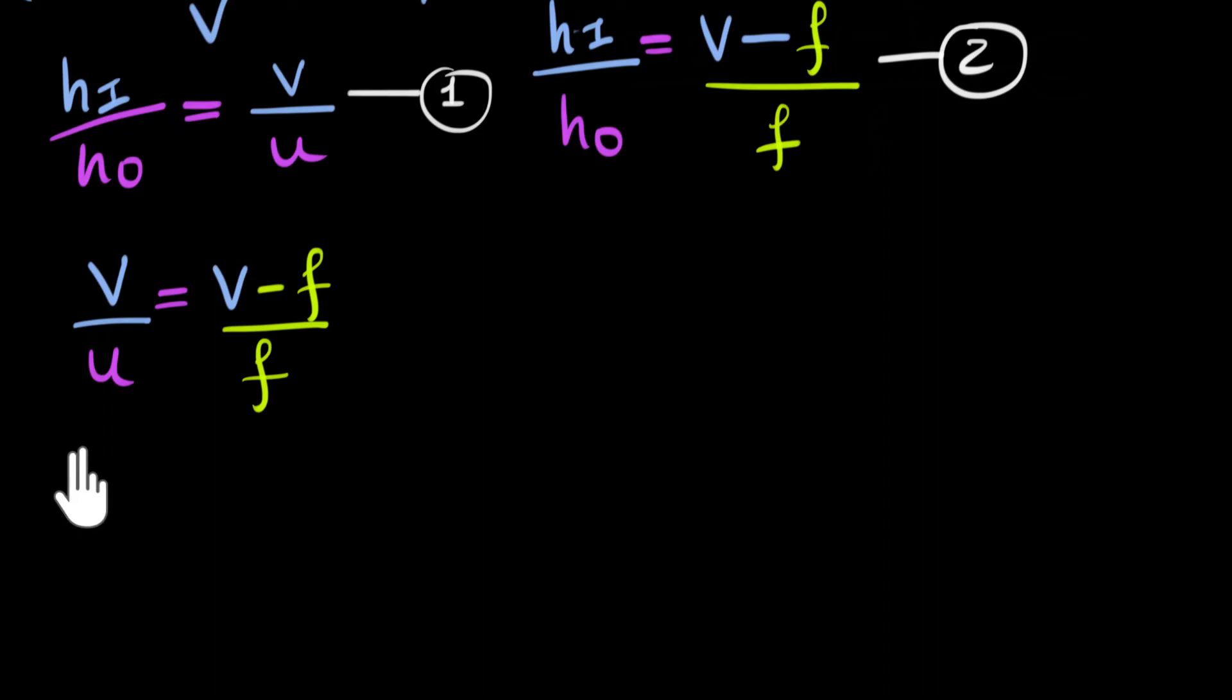What would we get? We'll get V times F, V times F equals, if you multiply that over here, you get UV, UV minus UF, minus U times F.